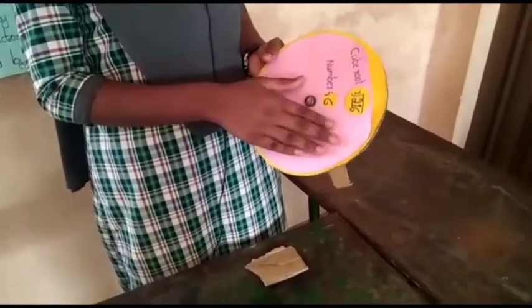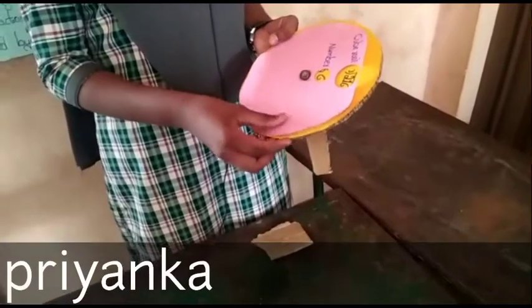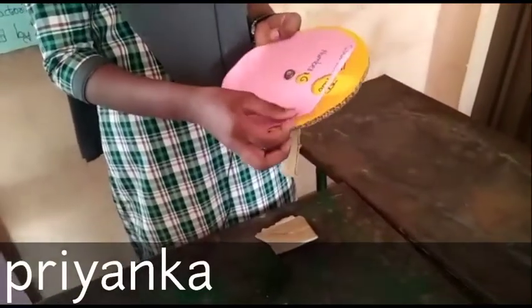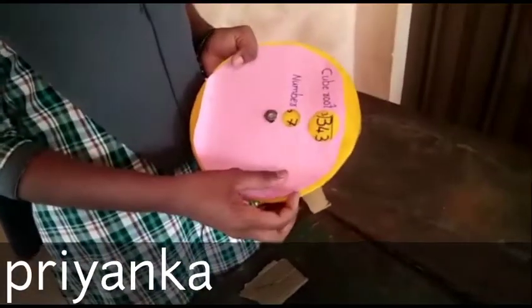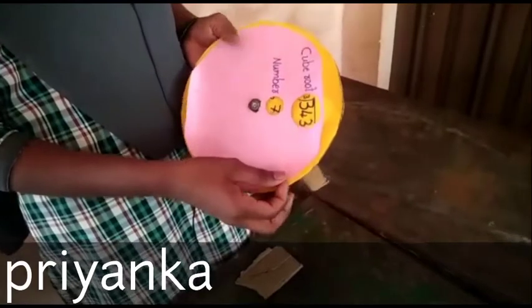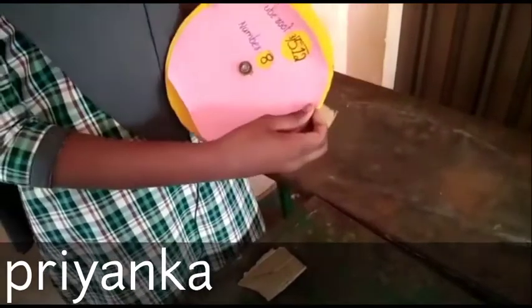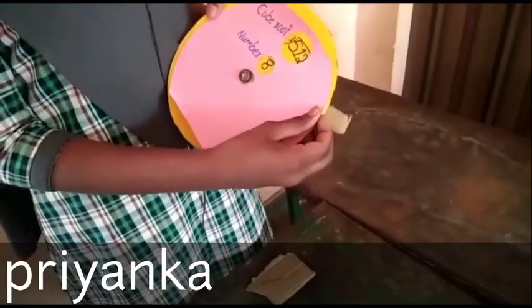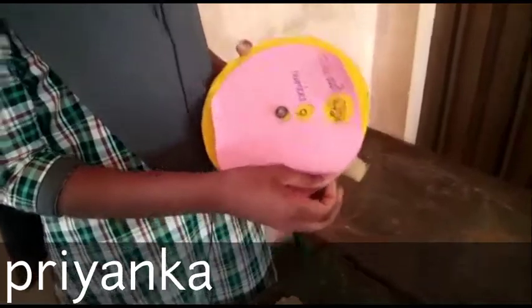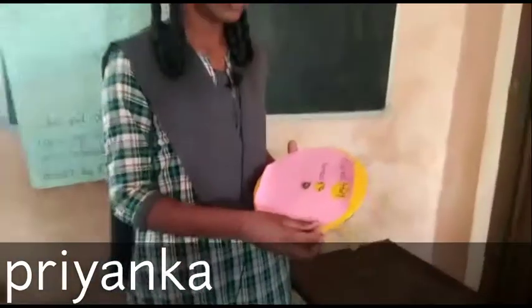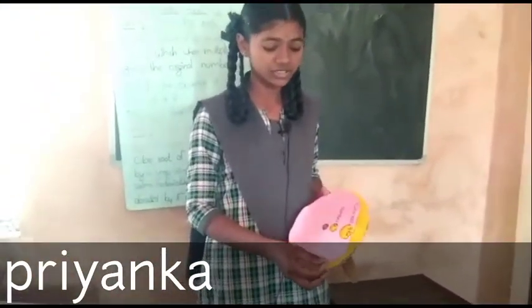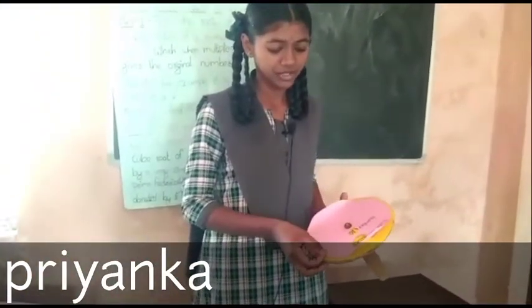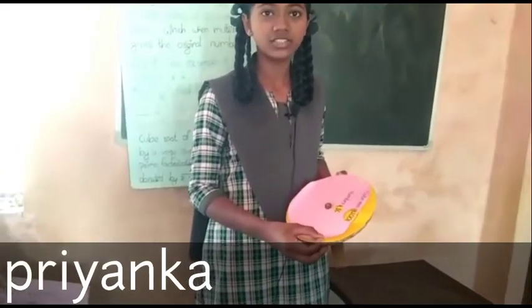Cube root of 216 is equal to 6, cube root of 343 is equal to 7, cube root of 512 is equal to 8, cube root of 729 is equal to 9, cube root of 1000 is equal to 10. And I'm done.